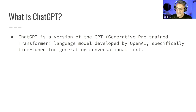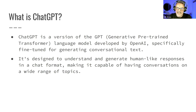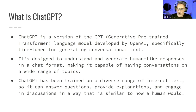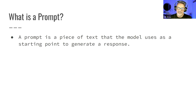Those of you who have used ChatGPT know that you can talk back and forth with it — it's a conversation. So it can understand and generate human-like responses in this chat format, this conversational format, which means you can talk to it on a bunch of topics because it's been trained on a massive set of data — billions upon billions of sentences gathered from all over the internet. So that's what ChatGPT is. You work with ChatGPT and any language model using a thing called a prompt. This is a piece of text that the model uses as its starting point to generate a response.